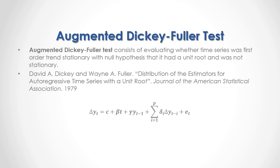As a formula, the current period data difference is equal to a constant plus a beta coefficient multiplied by a trend variable. This trend variable is a sequence from 1 all the way to the number of observations, plus the gamma coefficient multiplied by the previous period's data, plus the sum from 1 to p lags of delta coefficients multiplied by previous period data differences, plus regression residuals.